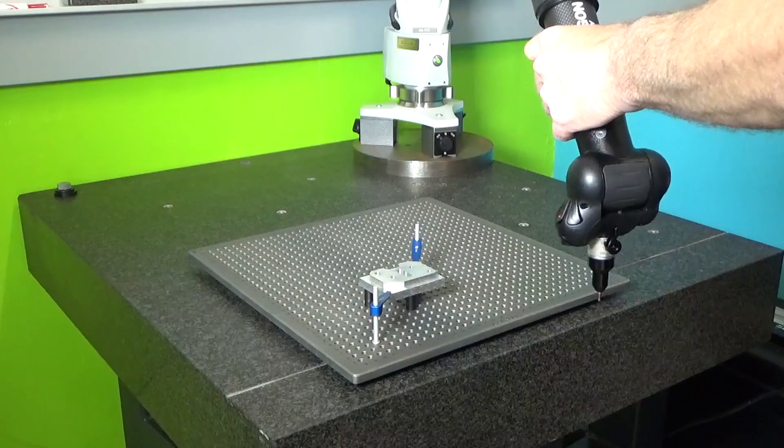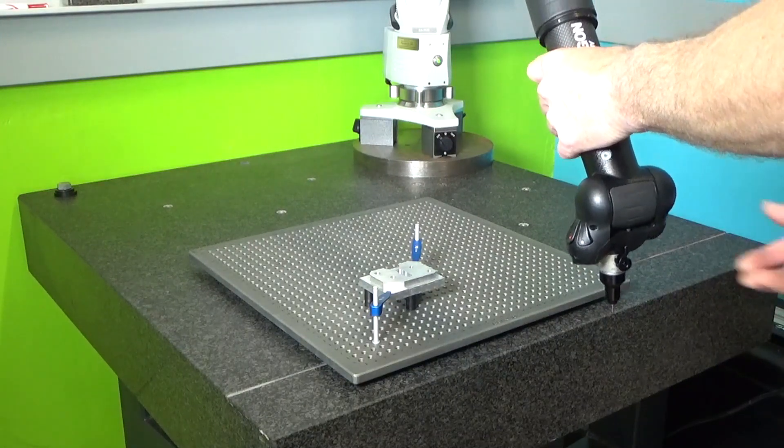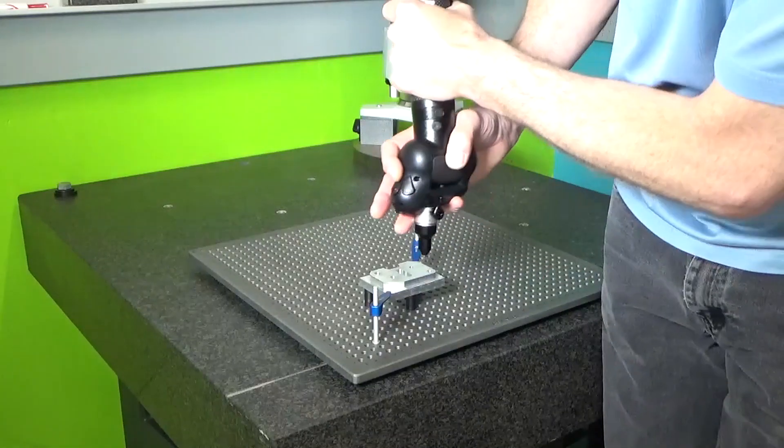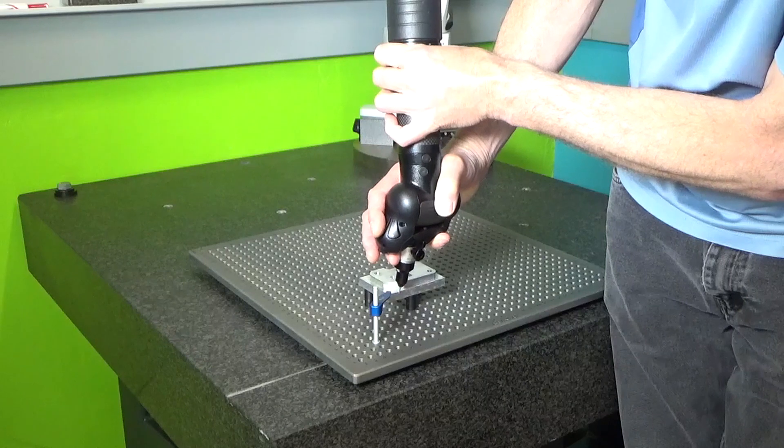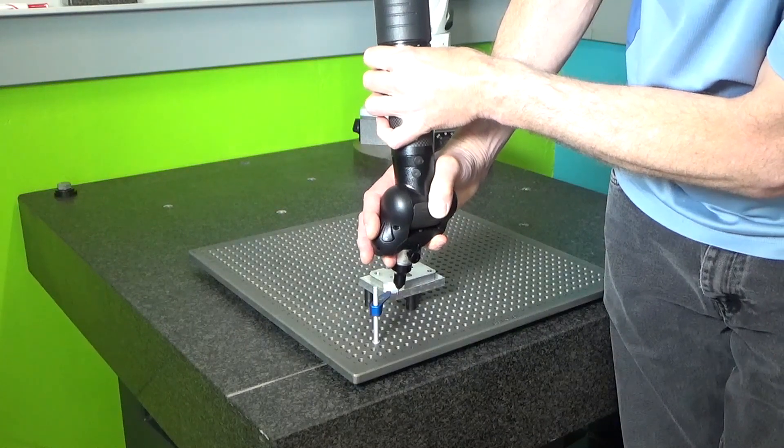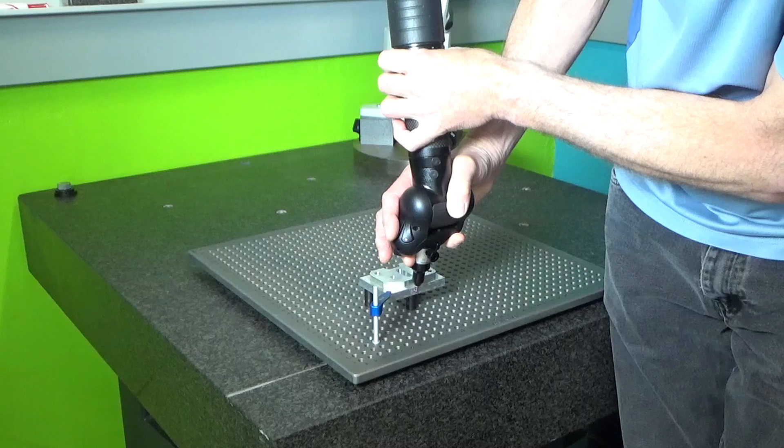We're going through this first step of the program here which is known as the manual alignment. This requires an operator to come in and make these measurements on three different bases in this particular case.